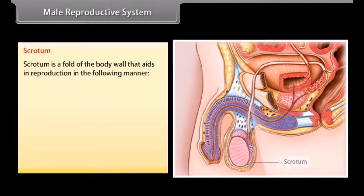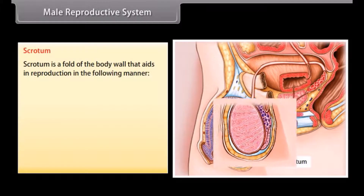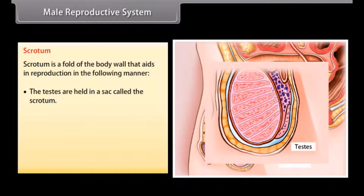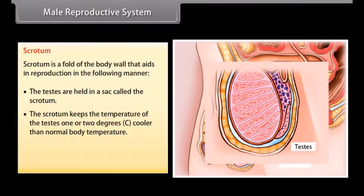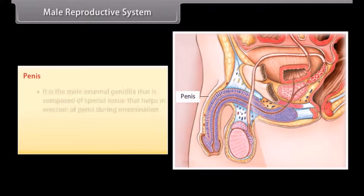The scrotum is a fold of the body wall that aids in reproduction. The testes are held in a sac called the scrotum. The scrotum keeps the temperature of the testes one or two degrees cooler than normal body temperature. This low temperature is necessary for sperm production and storage.